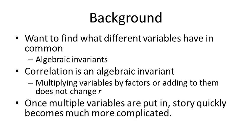To give you some background on the general linear model, it's important to remember that within mathematics there's something called algebraic invariance — basically what stays the same across changing variables. One of those algebraic invariances is correlation. Multiplying variables that are correlated with each other by some factor does not change the actual correlation or R. Once you have multiple variables though, these calculations aren't as easy and it's much harder to find those commonalities across them all.